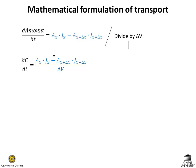If we now divide both sides of the equation by the volume delta V, and assume that this volume does not change in time, we can reformulate this mass balance equation for the concentration of the substance, which we denote by C.